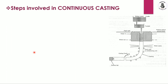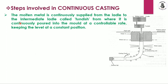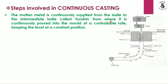The molten metal is continuously supplied from the ladle to an intermediate vessel called the tundish, from where it is continuously poured into the mold at a controlled rate, keeping the level at a constant position. The flow as well as the temperature of the molten metal must be controlled.